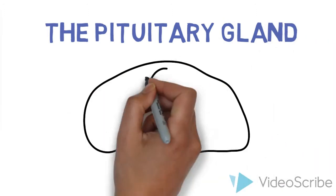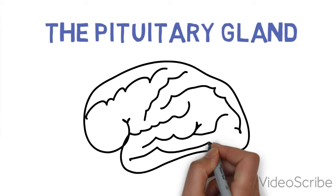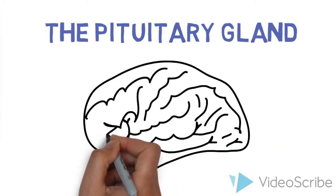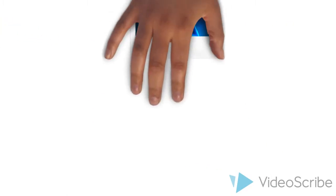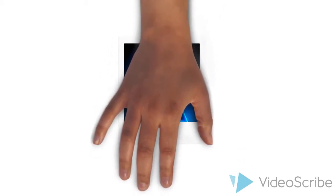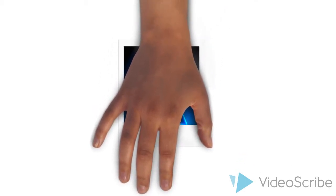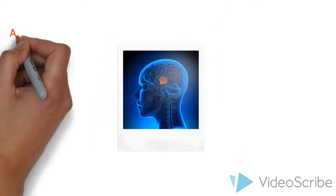The pituitary gland is a small pea-sized gland that sits in a bony enclosure of the brain known as the sella turcica. It has two regions: the anterior, which is the larger region, and the posterior, which is the smaller region.